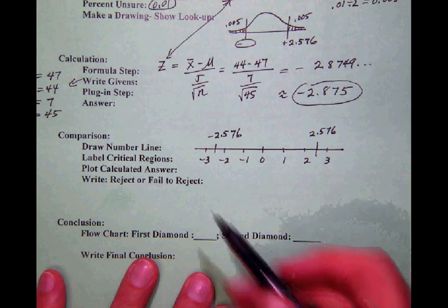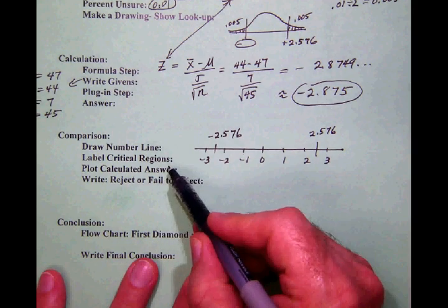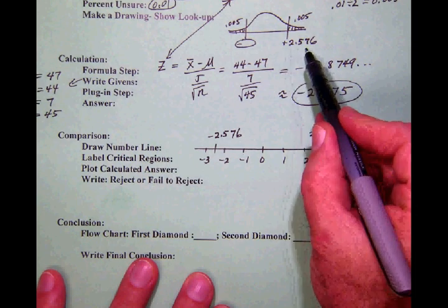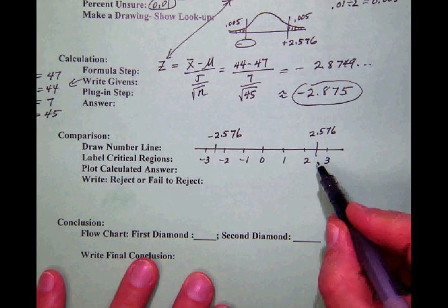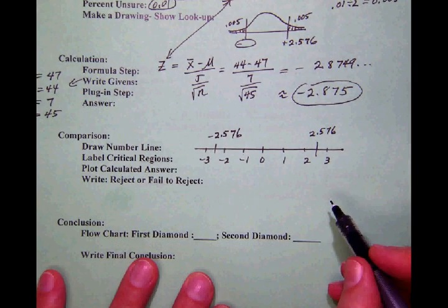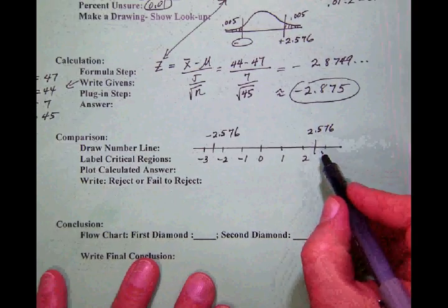First of all draw the number line and so I've done that. Notice here that we label the critical values first and those critical values as you recall were up here in the critical values section 2.576 and negative 2.576 but now those are the onsets of two critical regions.